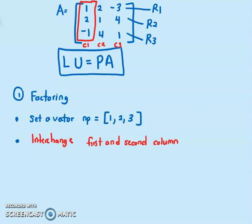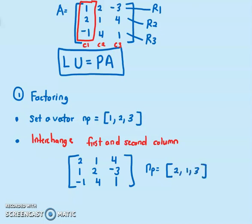So now we have a new matrix A: 2, 1, 4; 1, 2, minus 3; minus 1, 4, 1. Now this is a very important step. Since this one we did it, so my Np will change to 2, 1, 3. It's very important. We need to use that for our B vector later on.